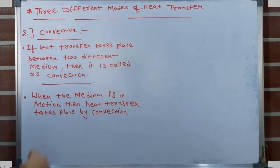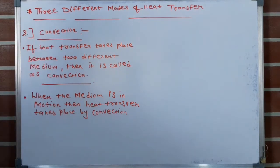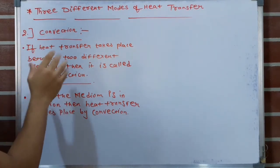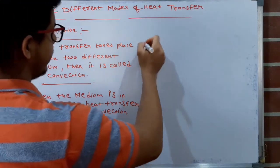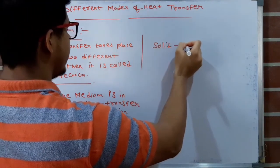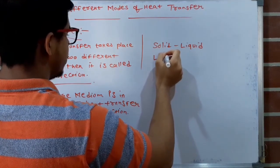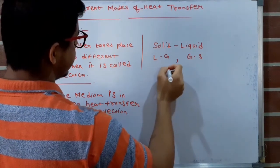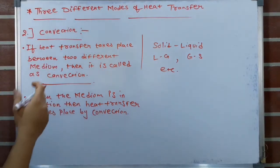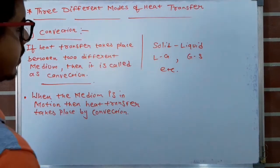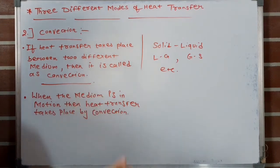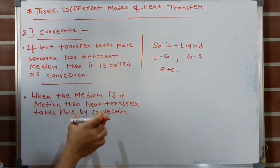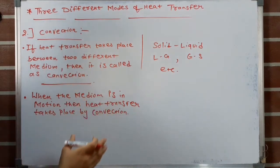The second mode of heat transfer is convection. If heat transfer takes place between two different mediums — for example, between solid and liquid, liquid and gas, or gas and solid — then it is called convection. When the medium is in motion, heat transfer takes place by convection. So for convection, the medium should be in motion, whereas for conduction the medium is at rest.